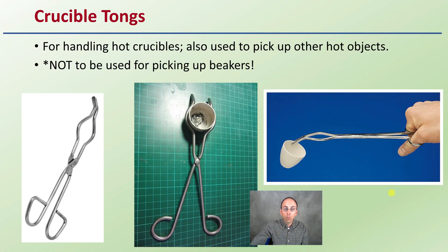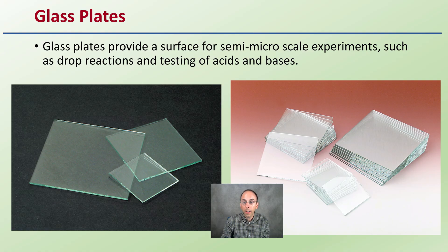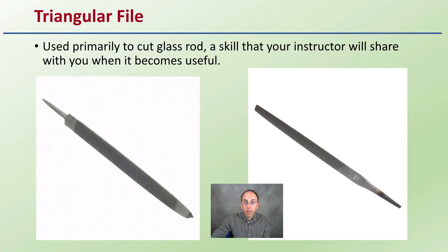Crucible tongs are basically tongs used for holding crucibles — and I stress they are not beaker tongs. On a quick look they might look similar, but they are not used for picking up beakers. Glass plates are basically plates of glass that can be utilized for microscale experiments and reaction testing — they're see-through and pretty tolerant of many chemicals. A triangular file is for cutting and filing things to take off sharp edges. It's a triangle shape, making it easy to hold, with different surfaces of different grits for different purposes.